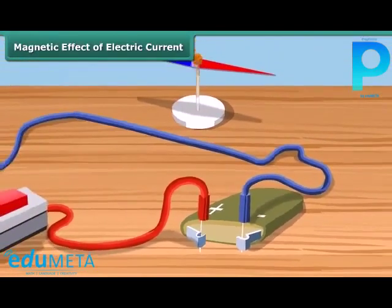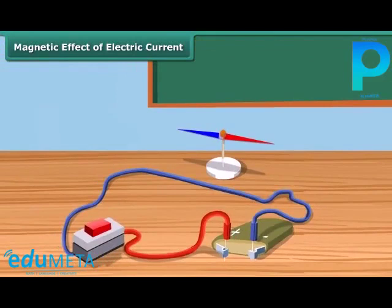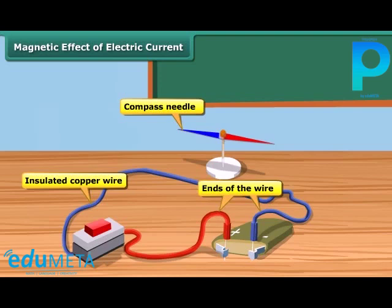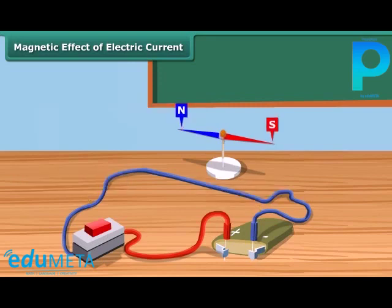When an electric current is passed through a wire, it behaves like a magnet. Let us perform a simple experiment to understand it. Take a thin insulated copper wire and fix it in the north-south direction. Place a compass needle, which is a tiny magnet, under the wire. Connect the two ends of the wire to a battery. When no current is flowing in the wire, the magnetic needle is parallel to the wire and points in the usual north-south direction.